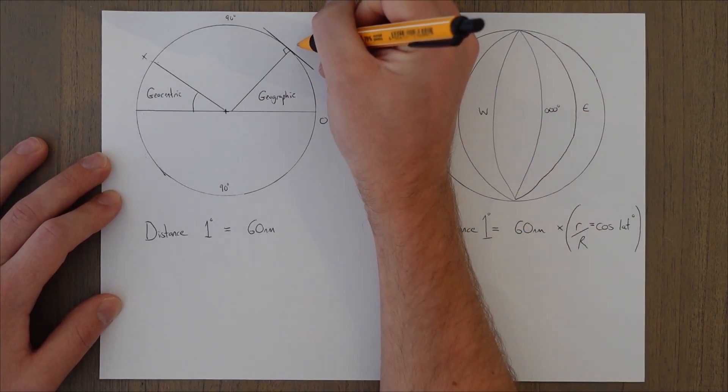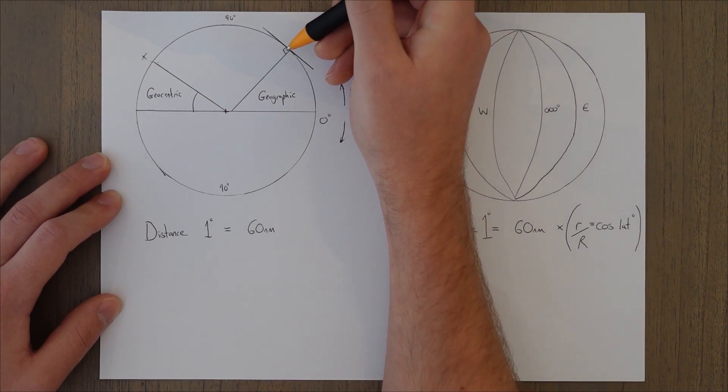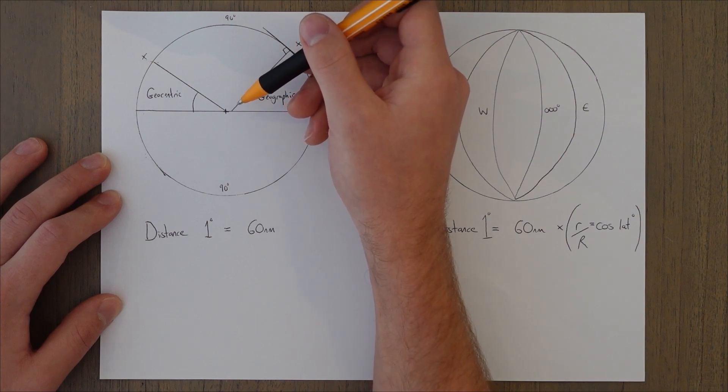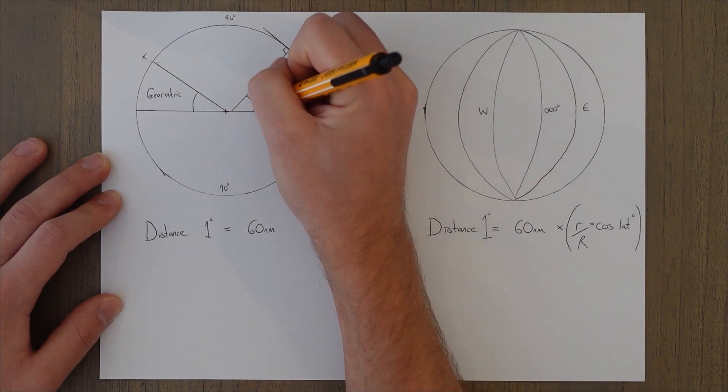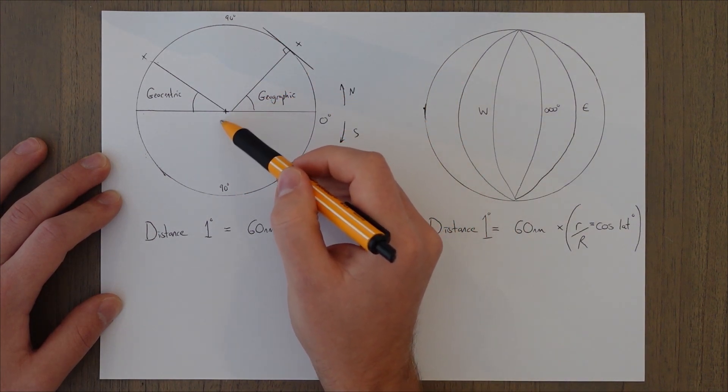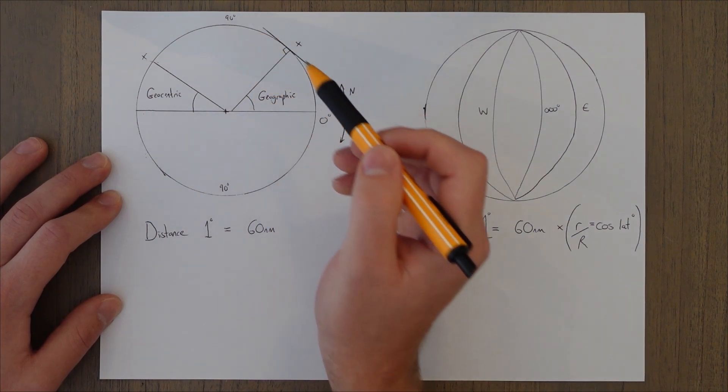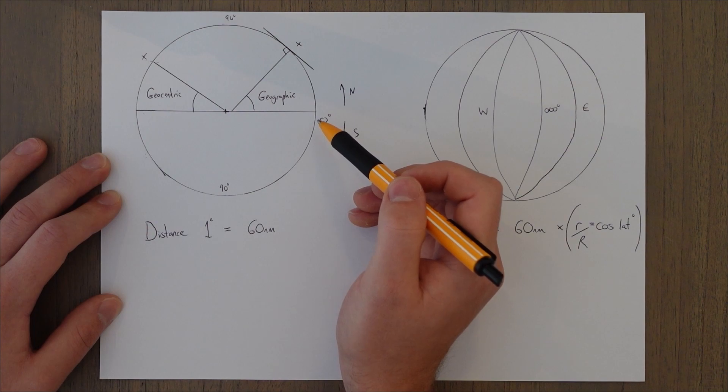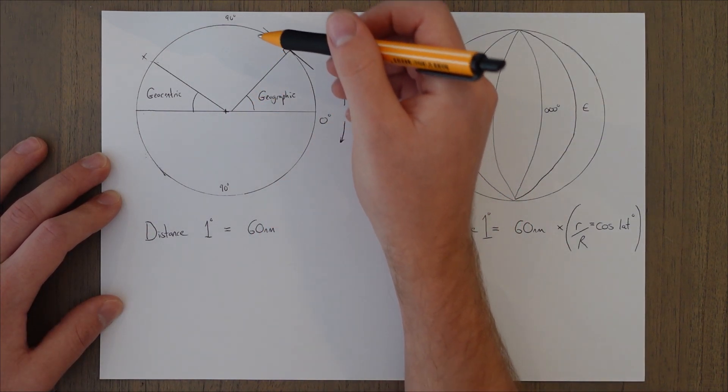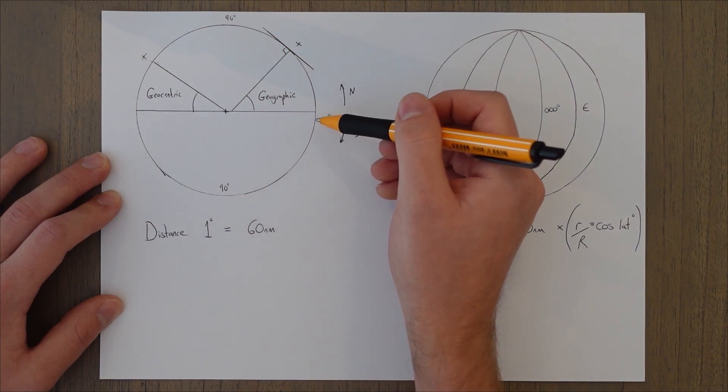Geocentric assumes this perfect sphere and it is this angle in here from the equator up to our point that we're interested in. The geographic uses our point that we're interested in and then draws a line perpendicular to that until it passes through the equator and it measures this angle in here. Because of the squish nature of the earth, it's going to be slightly off centre at all points apart from 90 degrees north, south and the equator.